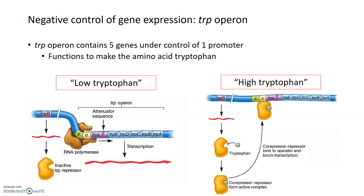However, when the levels of tryptophan are high, why would you make more of something you don't need? It's a waste of energy and time. When there's enough tryptophan in the cell, it actually acts as its own co-repressor on the trp repressor protein, binding to it to form an active complex. The trp repressor goes from inactive to active, meaning it binds to the DNA at the operator and stops transcription. Once tryptophan levels get low again, there's not enough of it to act as a co-repressor, it will fall off, leaving an inactive trp repressor, and therefore the cell is able to transcribe all these tryptophan biosynthesis enzymes again.